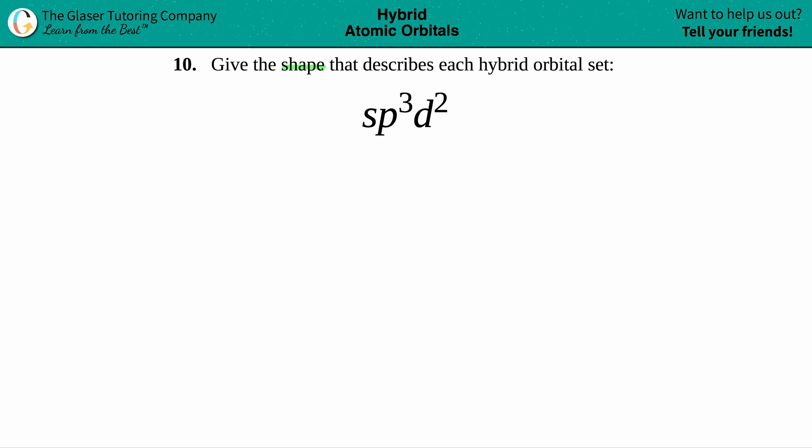Number 10, give the shape that describes each hybrid orbital set, and then we have sp³d².